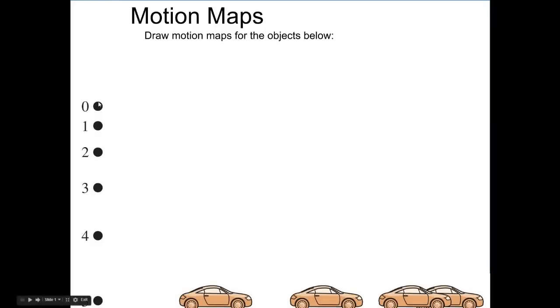So let's draw a motion map for this object here that's being dropped. Let's say this happens at the zero second, that's where the object is, then the first second, second, third, fourth, and fifth second.